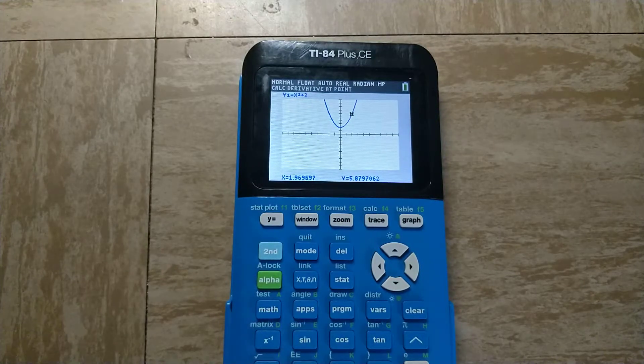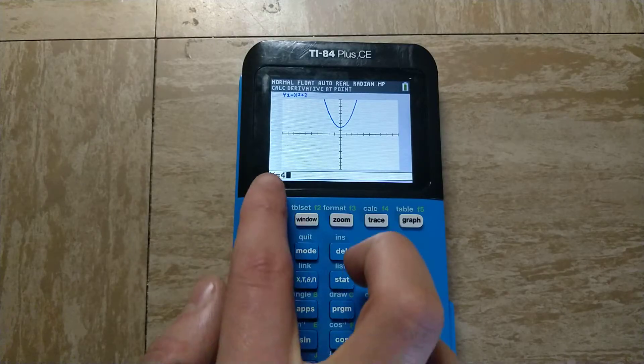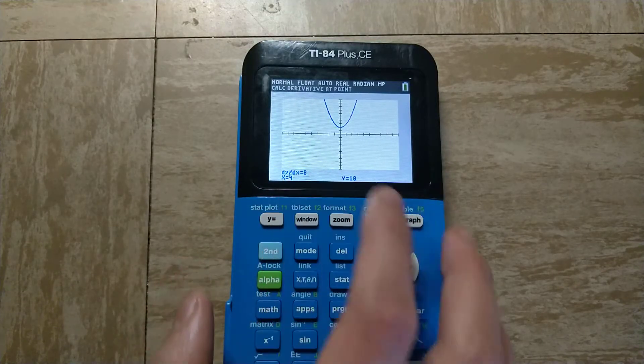The derivative at x equals 4, I can just type it in like that, would be 8, as you can see here.